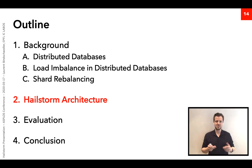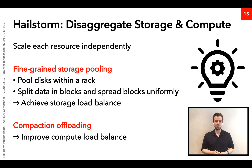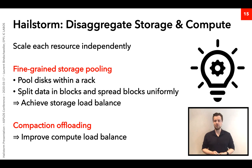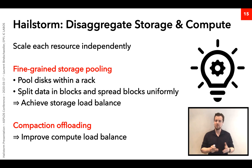Now let's look at Hailstorm. The key idea is to disaggregate storage and compute, a well-known way to scale each resource independently. We use two specific techniques. The first is called fine-grained storage pooling, which involves pooling all disks within a rack and splitting all data from every instance into blocks, spreading them uniformly across the disks to achieve storage load balance.